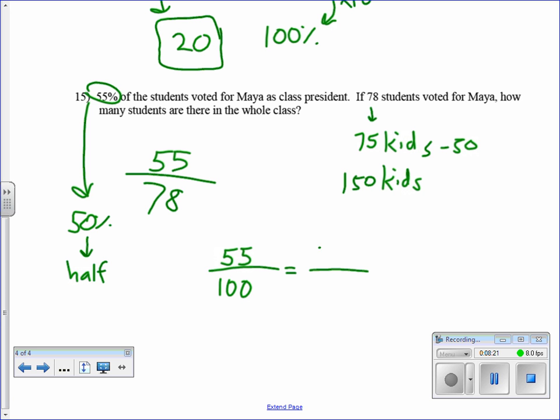So 55 means 55 out of 100. In this case, the part that equals the 55 is 78 kids. So this is our missing number. Actually, I wrote this backwards. It's the 78 goes on top, the 55 goes on the bottom. See, that's why I don't do it that way.